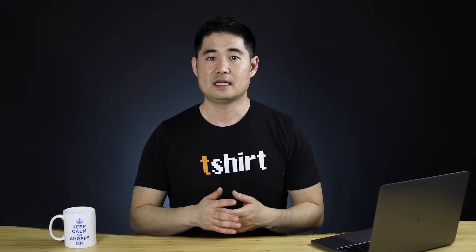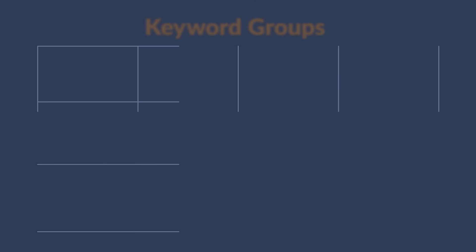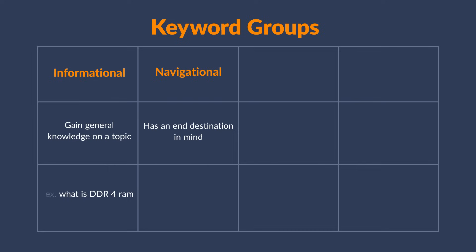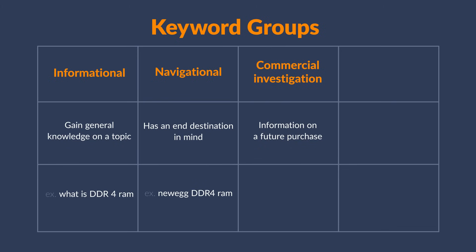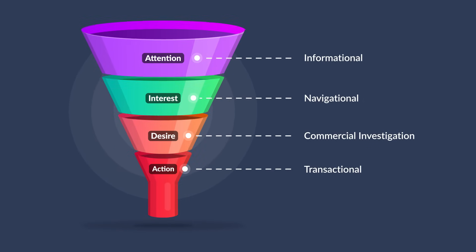The point of this exercise isn't to find as many random keywords as possible. It's to filter them down and group them by search intent. Search intent just means the reason behind a searcher's query, and these can generally be categorized into four groups. First are informational keywords, where a searcher is looking to gain general knowledge on a topic — for example, what is DDR4 RAM? Next are navigational keywords, where the searcher usually knows the destination they want to reach, like Newegg DDR4 RAM. Third are commercial investigation queries, which show that someone is looking to get information on something they want to eventually buy — often comparisons with modifiers like best DDR4 RAM. Finally are transactional keywords, which show that someone is ready to make a purchase, like buy DDR4 RAM.